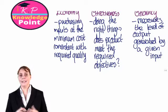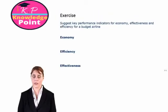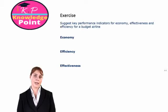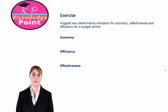Those are our three E's in a value for money analysis. Let's have a look at an exercise. We can link our value for money analysis into key performance indicators from a previous session. In this exercise, we are asked to suggest key performance indicators for economy, effectiveness, and efficiency for a budget airline. So we want to think about what kinds of things we would look at to see how economical a company's activities are.